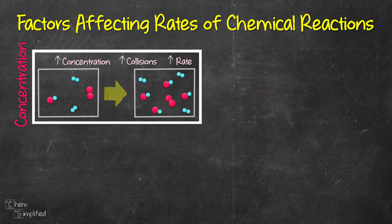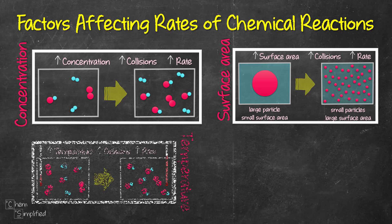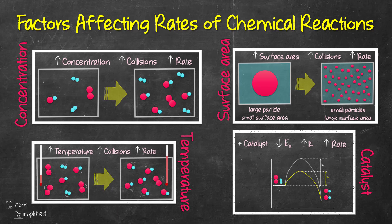To sum it up, these are the four factors that affect the rates of chemical reaction. When we increase these factors, the rates of chemical reaction will increase as well.